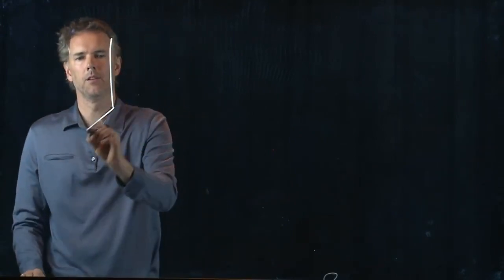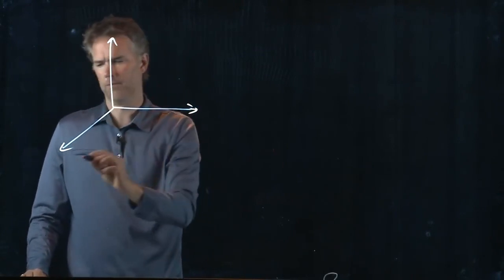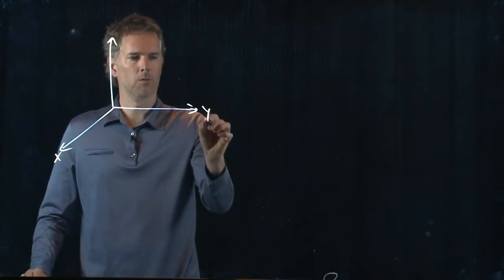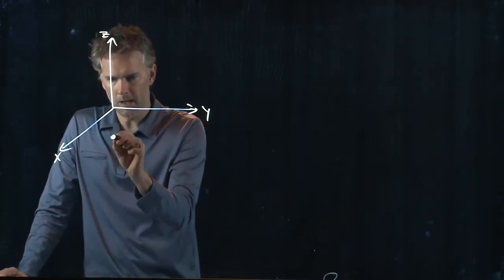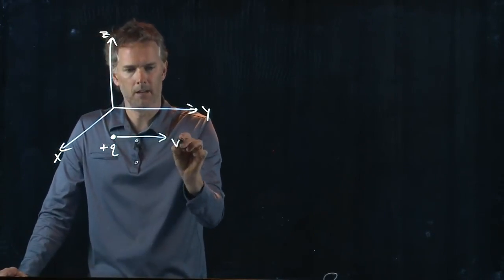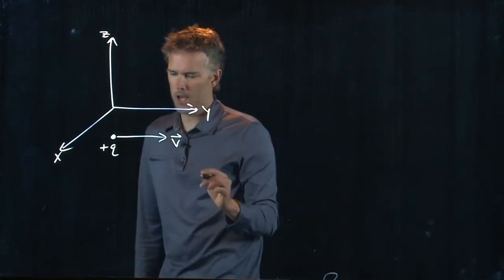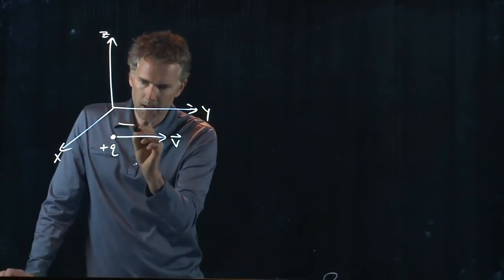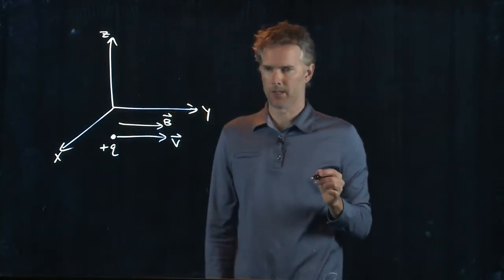So let's say we do the following. Let's say we have this. Let's draw an XYZ coordinate system. And now let's do this. We're going to take a positive Q, and we're going to send it flying in the Y direction. And now it's also in a B field that is also pointing in the Y direction.